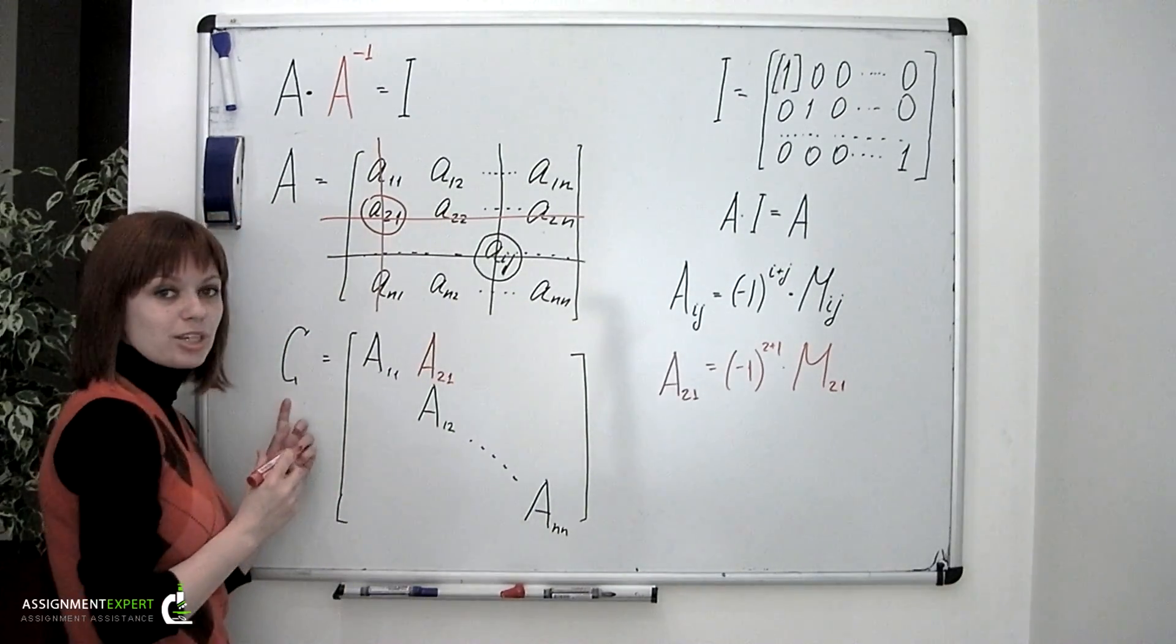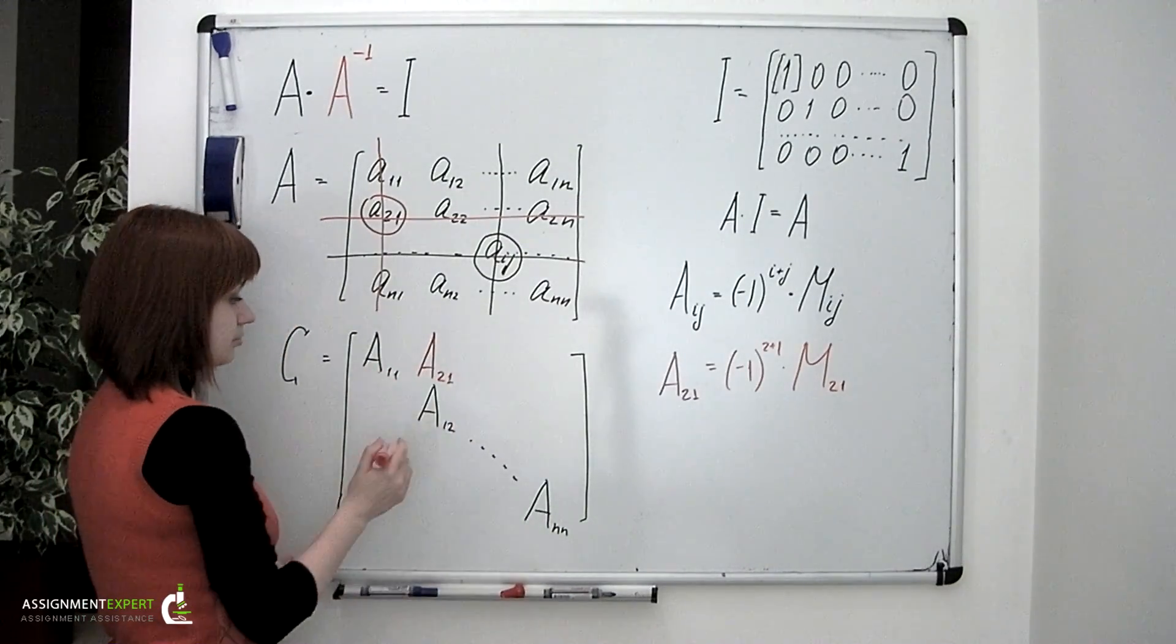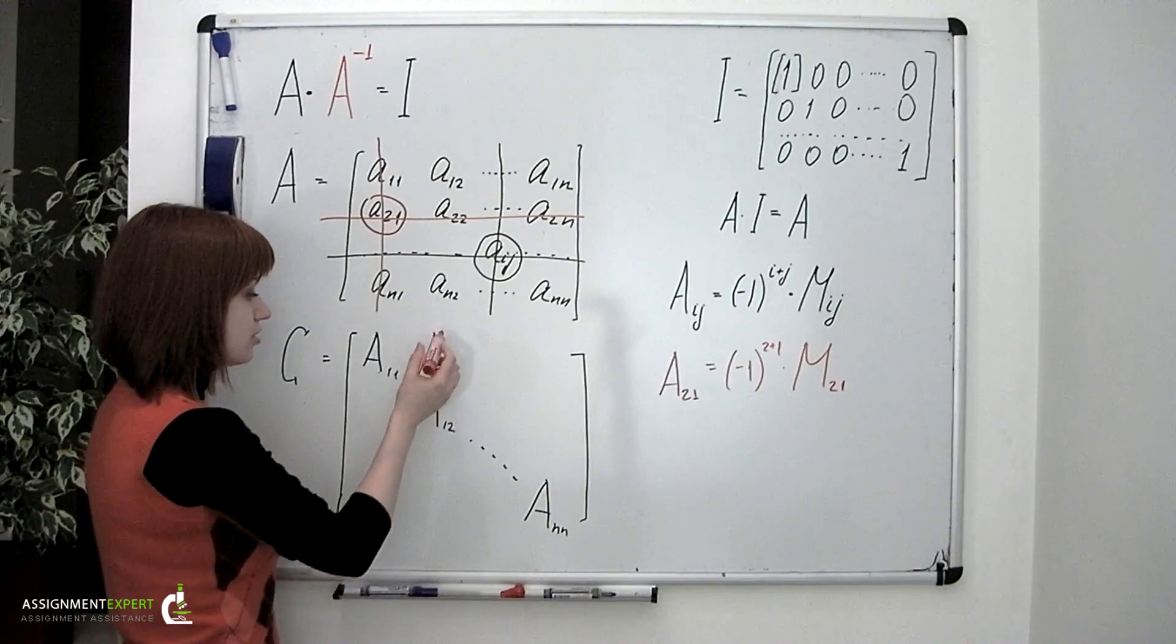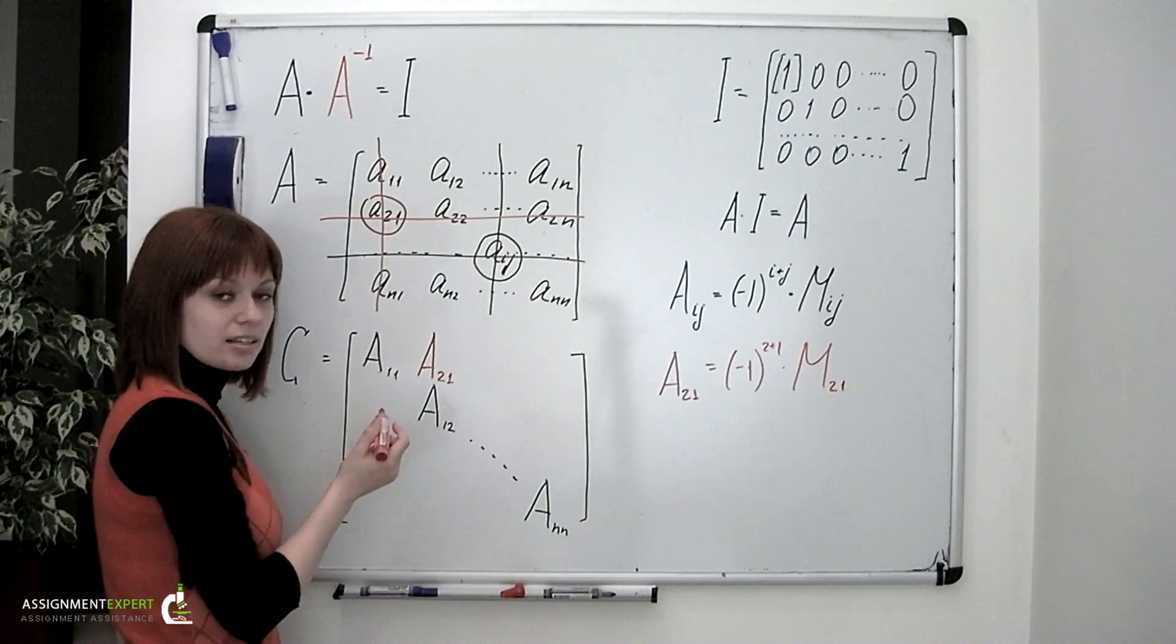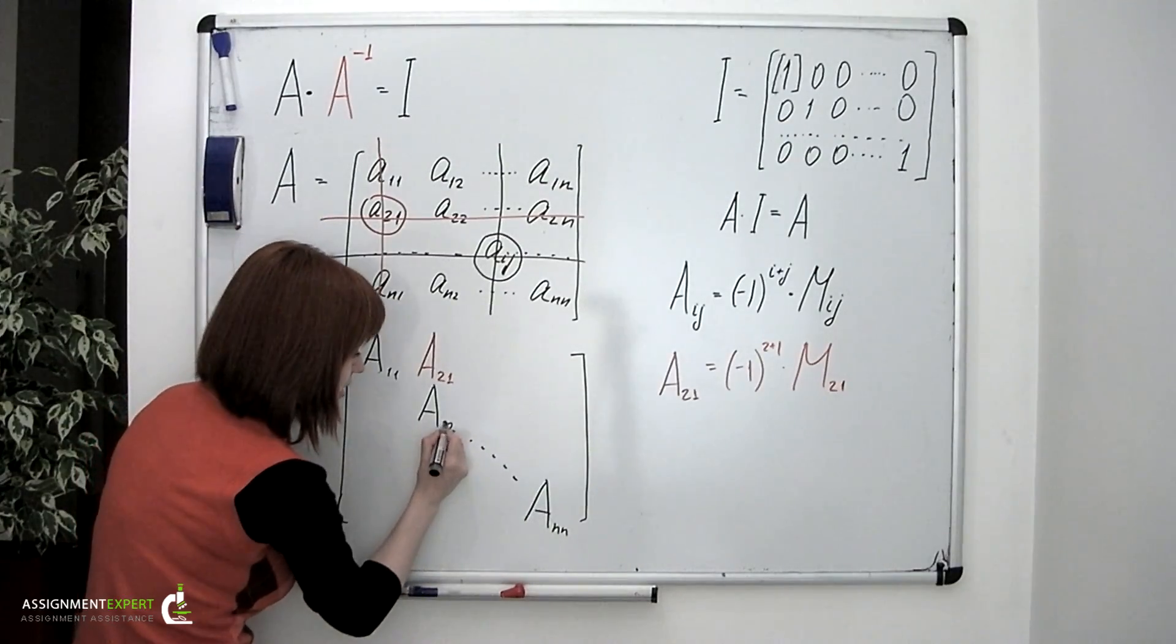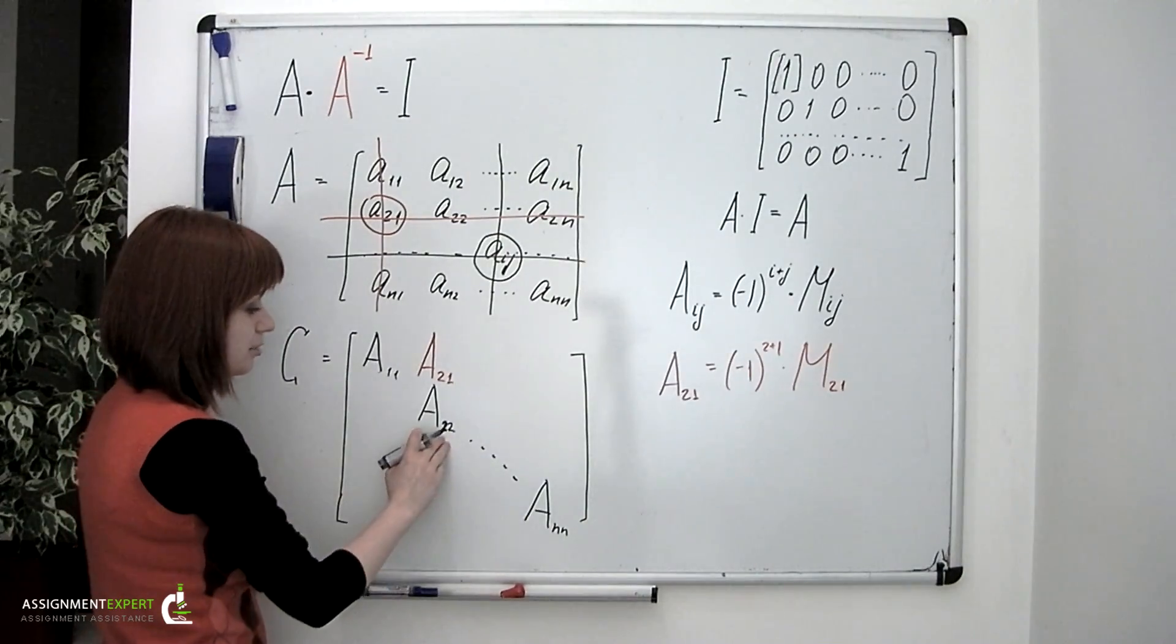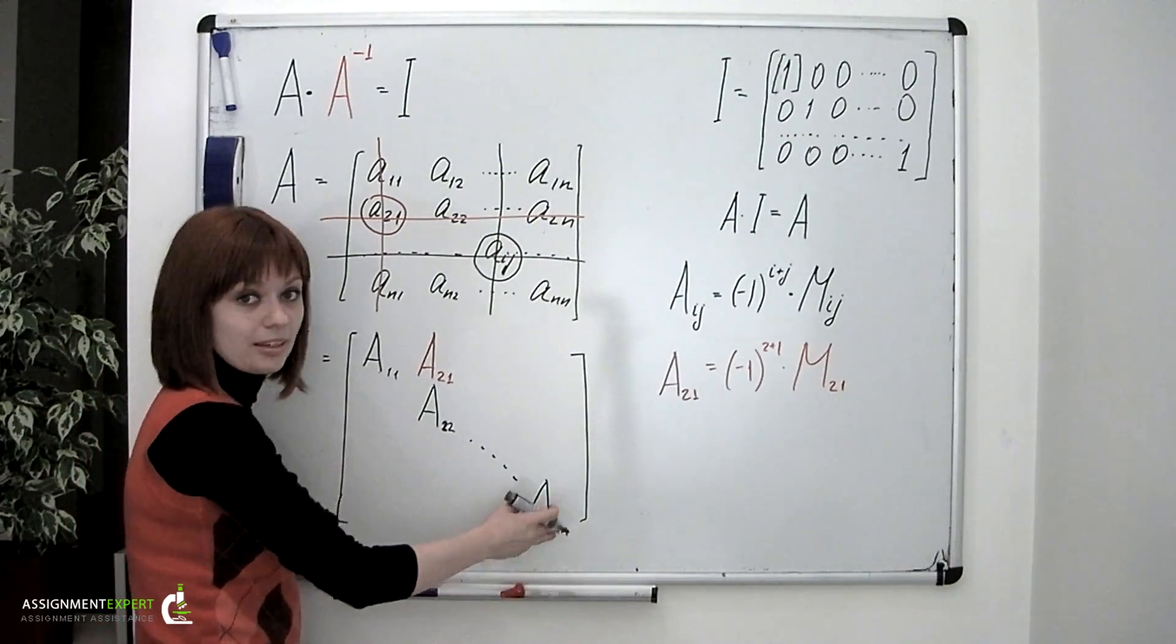So the thing about the adjugate matrix is that the first number in the index of the elements stands for the number of the column, and the second number stands for the number of the row. I'm sorry, I made a mistake. Here we have A_11, A_22, and A_nn.